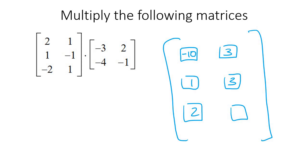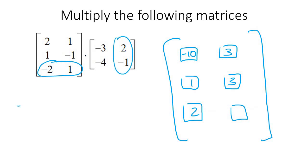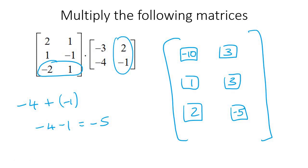For the last entry, we take that row and that column: -4 plus 1 times -1 which is -1, so -4 minus 1 gives -5. And there we have it — multiplying matrices.